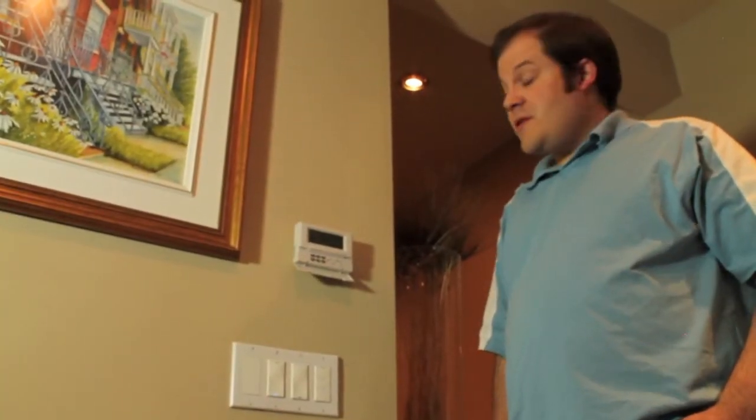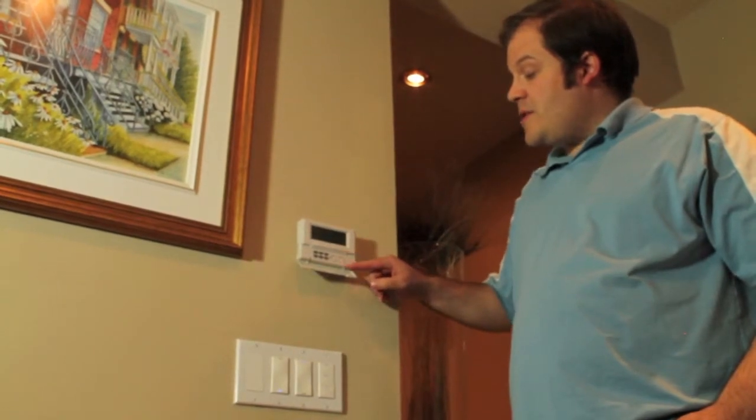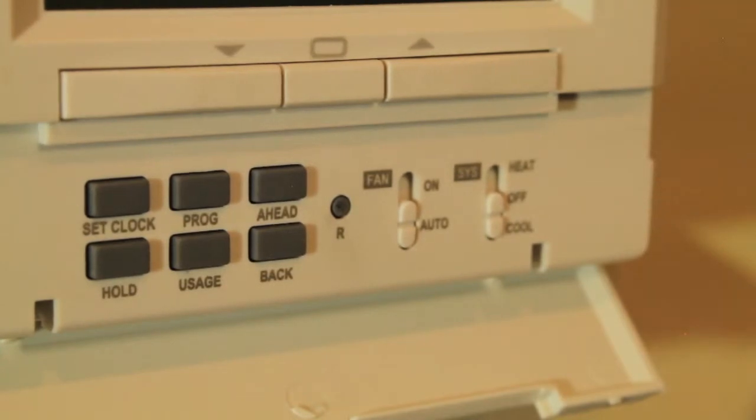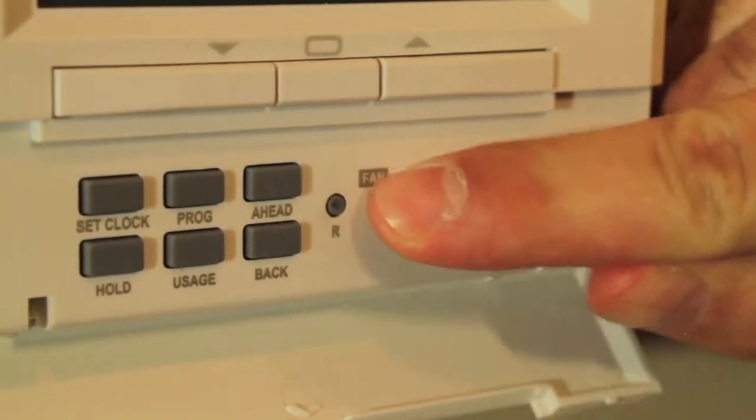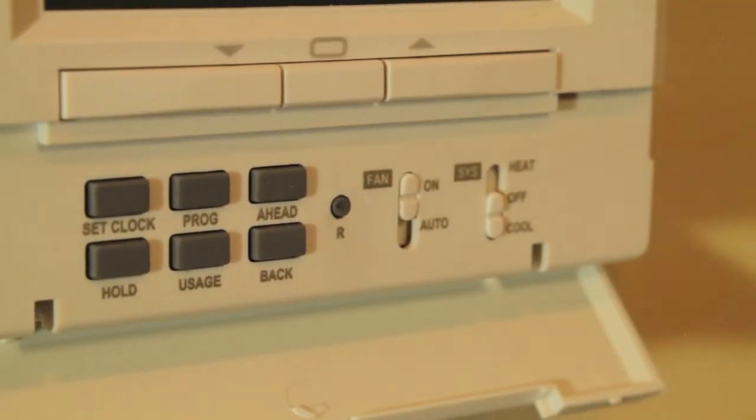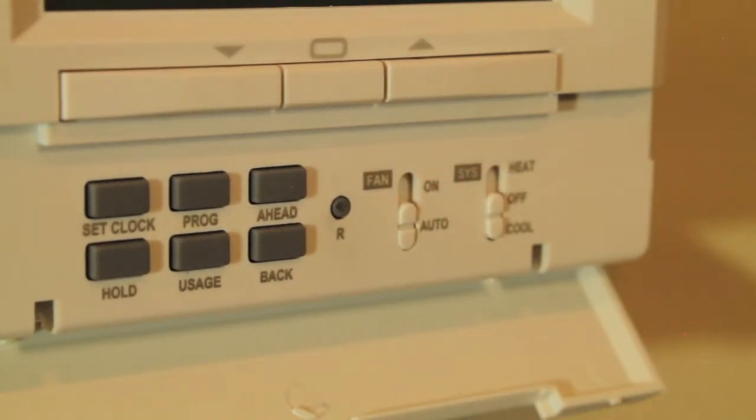On both models there's a switch labeled fan with settings on and auto. If you had a G-wire to connect to your thermostat, this fan switch lets you turn your fan on constantly or have it turn on and off automatically with your heating and cooling systems.